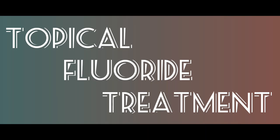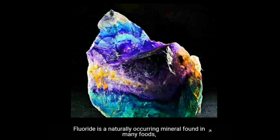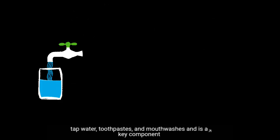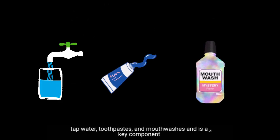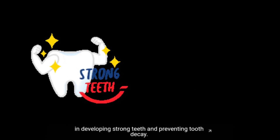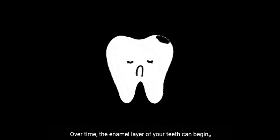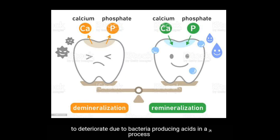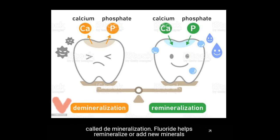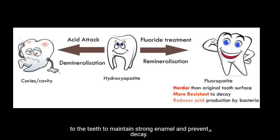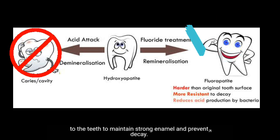In this video we are going to talk about topical fluoride application. Fluoride is a naturally occurring mineral found in many foods, tap water, toothpaste, and mouthwashes, and is a key component in developing strong teeth and preventing tooth decay. Over time, the enamel of your teeth can begin to deteriorate due to bacteria producing acids in a process called demineralization. Fluoride helps remineralize, or add new minerals to the teeth, to maintain a strong enamel and prevent decay.